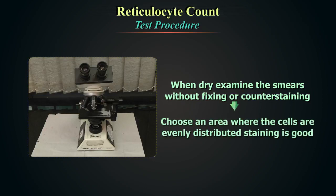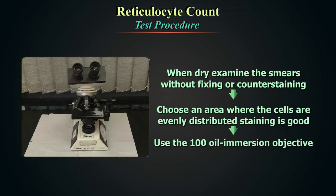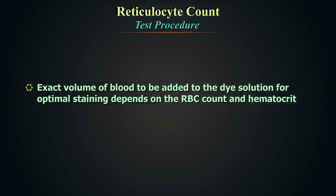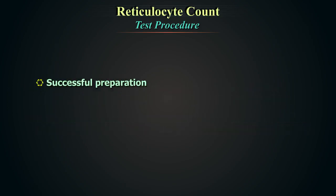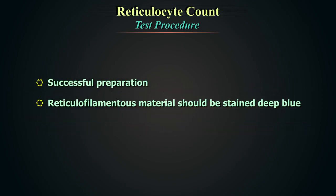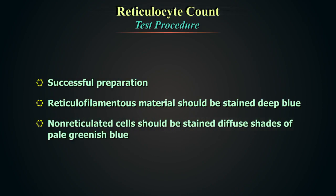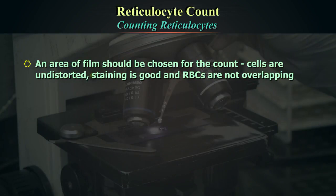Choose an area where red cells are evenly distributed and staining is good; use the 100X oil immersion objective. The exact volume of blood to be added depends on the red blood cell count and/or hematocrit. A larger proportion of anemic blood and a smaller proportion of polycythemic blood should be added. In a successful preparation, the reticulofilamentous material should be stained deep blue and non-reticulated cells in diffuse shades of pale greenish blue.